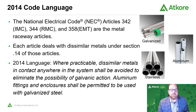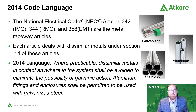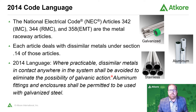The 2014 code language states: where practicable, dissimilar metals in contact anywhere in the system shall be avoided to eliminate the possibility of galvanic action. Aluminum fittings and enclosures shall be permitted to be used with galvanized steel. Looking at the pictures, we have galvanized conduit, aluminum conduit, and stainless steel conduit. In the 2014 code language, aluminum and galvanized are mentioned, but there is nothing about stainless steel. So in 2014 the code offers no guidance on what can be done to make the transition to stainless steel conduit.